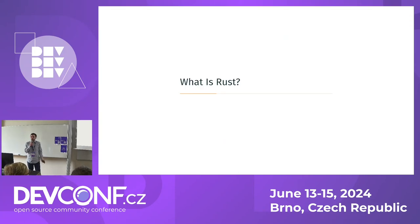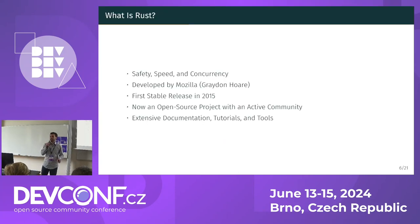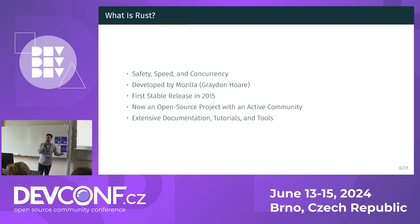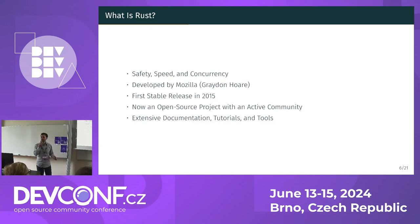But what is Rust, really? Rust is a modern systems programming language designed with a focus on safety, speed, and concurrency. It was initially developed by Mozilla and has grown to be widely adopted due to its unique features and advantages. Today, it is an open-source project with an active community providing extensive documentation, tutorials, and tools.